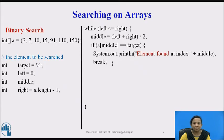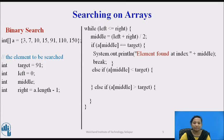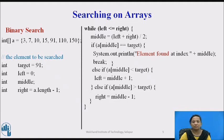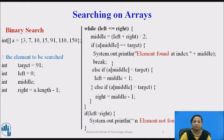If the middle element does not match the target, there are two cases. If the target is greater than the middle element, search continues in the second half, so the left index is updated to middle plus 1. If the target is smaller than the middle element, search continues in the first half, so the right index is updated to middle minus 1. Search continues while left index is less than or equal to right index. If the element is not found, the left index exceeds the right index and the element-not-found case is reached.